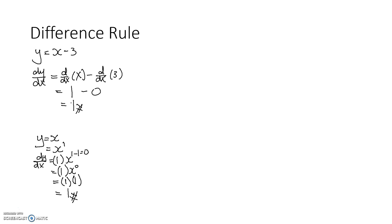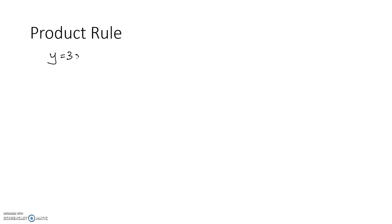This is the difference rule — very easy. Now the product rule: this is where things get interesting. A product rule is used when there's a product. For example, y equals to 3x, which equals 3 times x. The answer intuitively is dy/dx equals 3, but how do we get there?